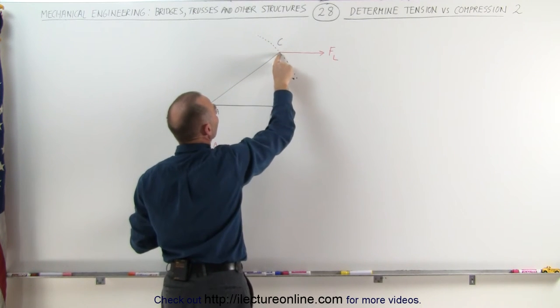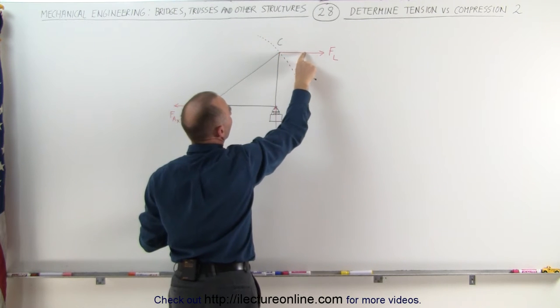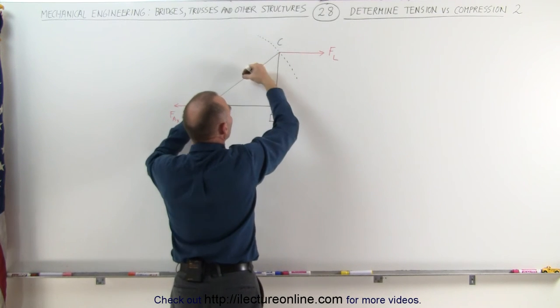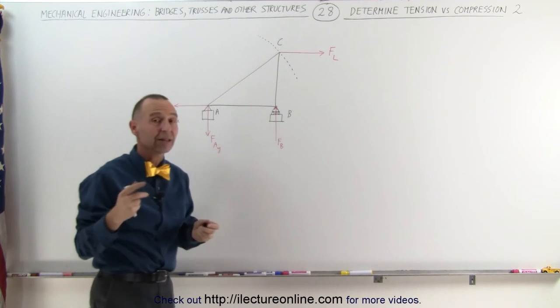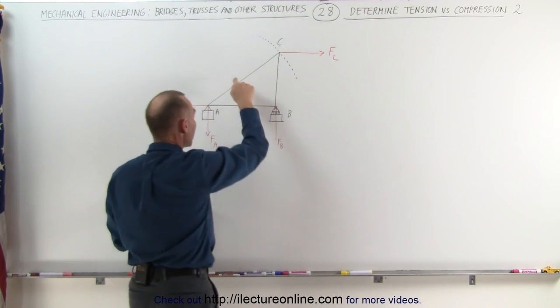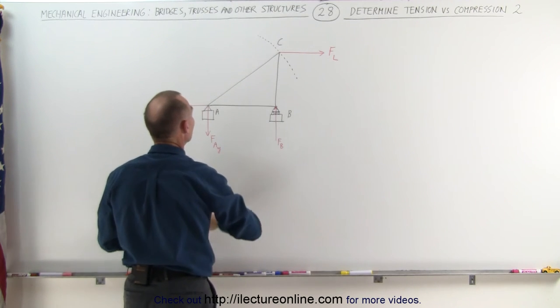And this beam, the end of this beam, could never follow the direction of the line of action of the force, which means the beam would have to be stretched out in this direction. That tells us that this beam right here must be under tension.